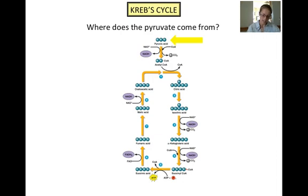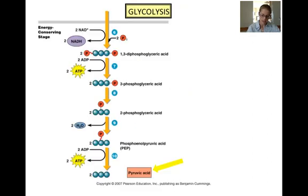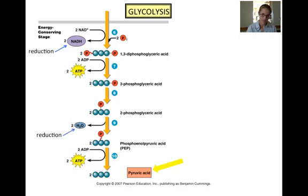Where does the pyruvate come from that is needed for the Krebs cycle to start? It is the end product of glycolysis, the first step in the process of cellular respiration. Glycolysis literally means sugar splitting. It is a series of ten reactions that generates two molecules of pyruvic acid, the three-carbon molecule that is needed to begin the Krebs cycle. This slide only shows the last five steps of glycolysis, known as the energy conserving stage.